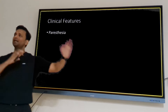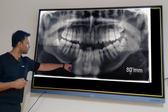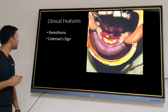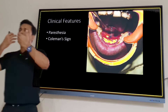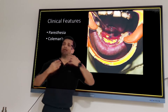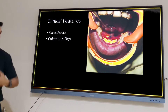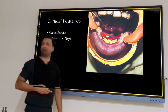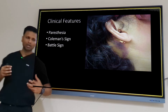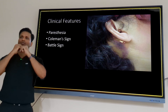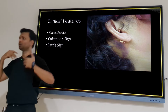Coleman's sign is especially seen in symphysis and parasymphysis fractures — the lingual cortex and periosteum are torn, causing ecchymosis (blood collection) in the floor of the mouth at the lingual mucosa. Battle's sign — post-auricular ecchymosis over the mastoid region — is especially seen in condylar fractures when force is transmitted to the mastoid air cells.